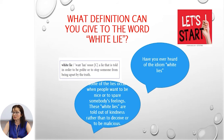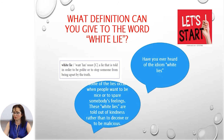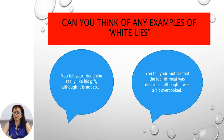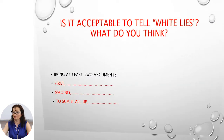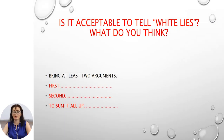Some lies occur when people want to be nice or to spare somebody's feelings. These white lies are told out of kindness rather than to deceive or to be malicious. The definition of a white lie: a lie that is told in order to be polite or to stop someone from being upset by the truth. Can you think of any examples? You tell your friend you really like his gift, although it is not so. You tell your mother that the loaf of meat was delicious, although it was a bit overcooked. Is it acceptable to tell white lies? Bring at least two arguments.